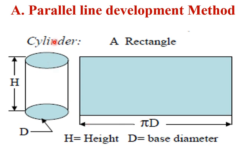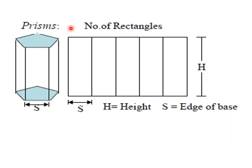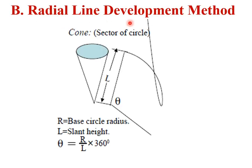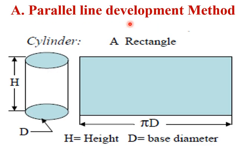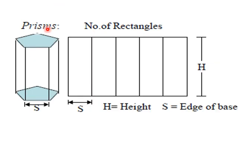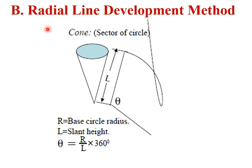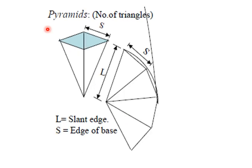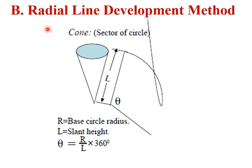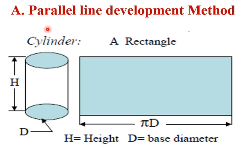Development of lateral surfaces can be drawn by four methods. The first is the parallel line development method, the second is the radial line development method. The other two — triangulation method and approximate method — are not in your syllabus and will not be considered. Cylinder and prism lateral development are drawn using the parallel line development method, and cone and pyramid lateral development are drawn using the radial line development method. This is very important to remember.